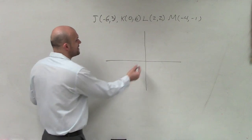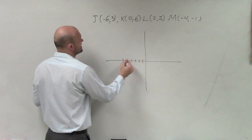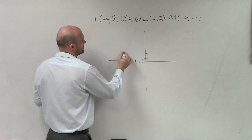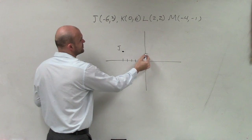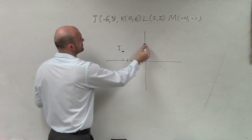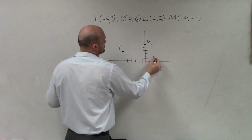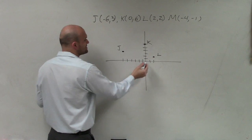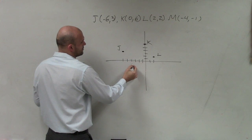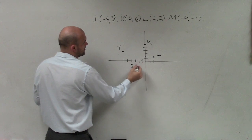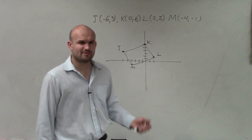You know enough to be able to do that. So you have J at negative 6, 3. K is 0, 6. L is 2, 2. And M is negative 4. Does that look like a rectangle?